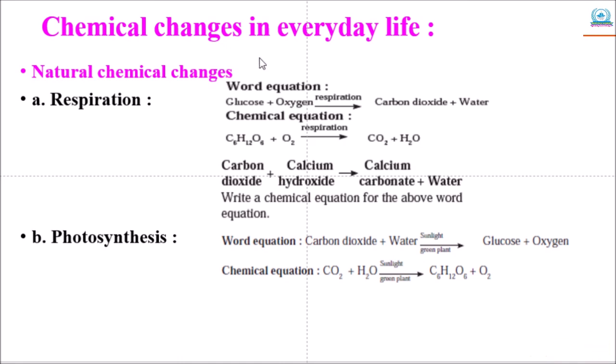Chemical equation: C6H12O6 plus O2 through respiration gives CO2 carbon dioxide and H2O water. Another example: carbon dioxide plus calcium hydroxide gives calcium carbonate plus water.